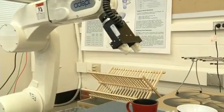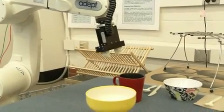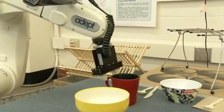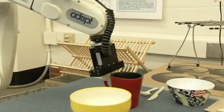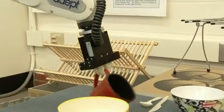So it'll sort of recognize, depending on how the features are encoded, it'll recognize a kind of curve on a bowl that's good for grasping or a handle on a mug or a lip of a mug that's good to grasp.